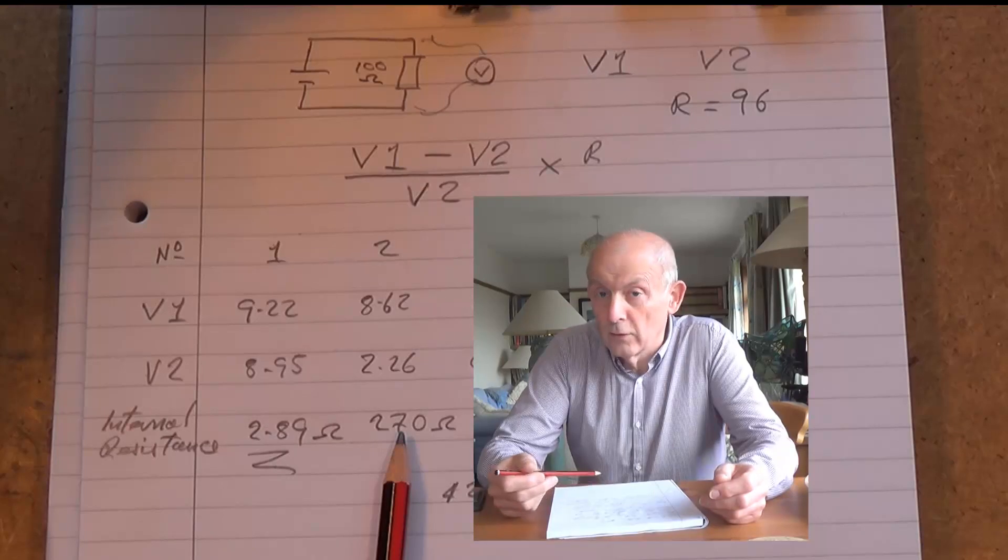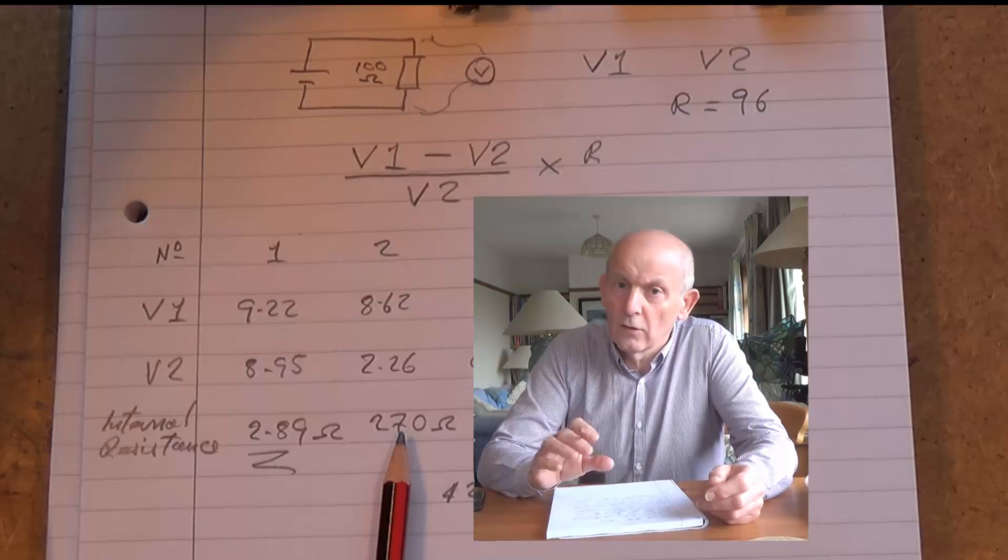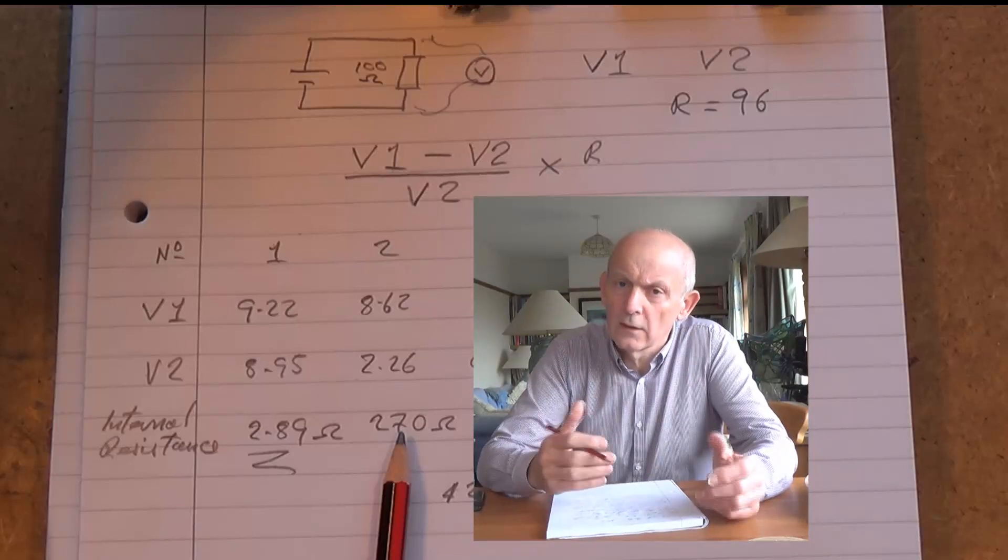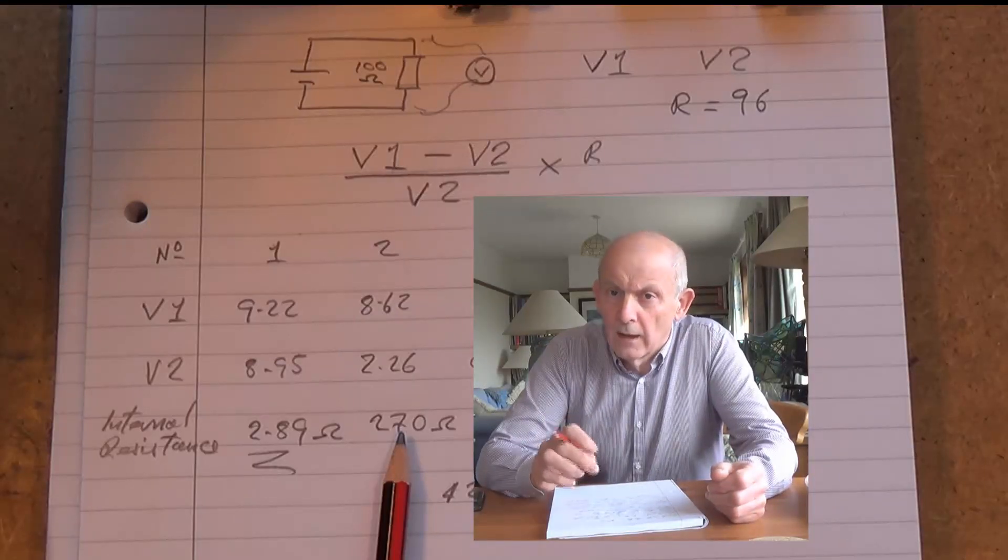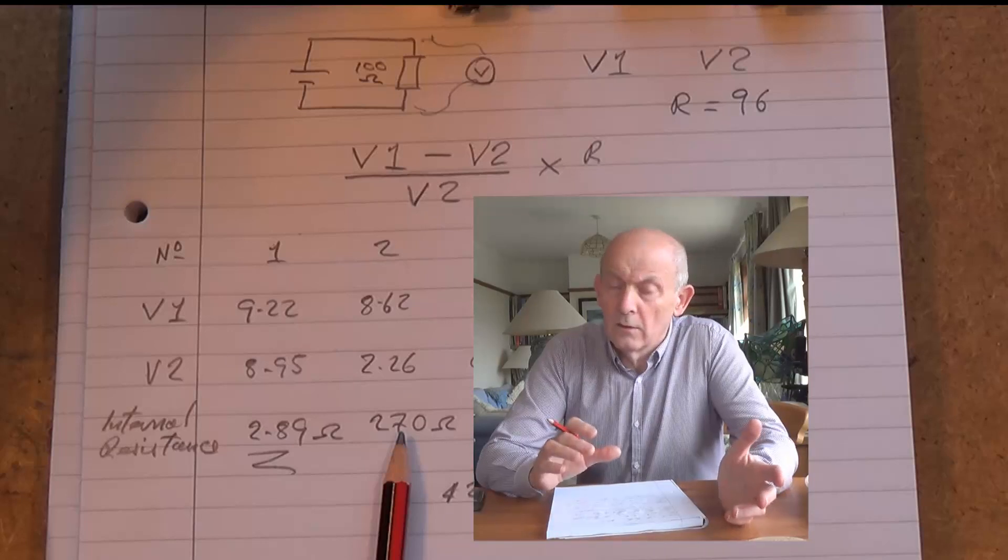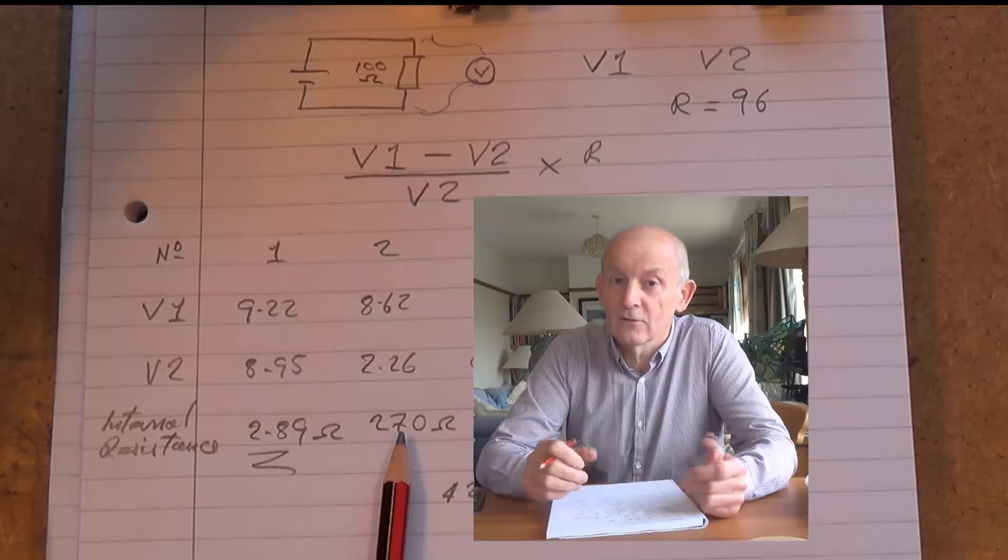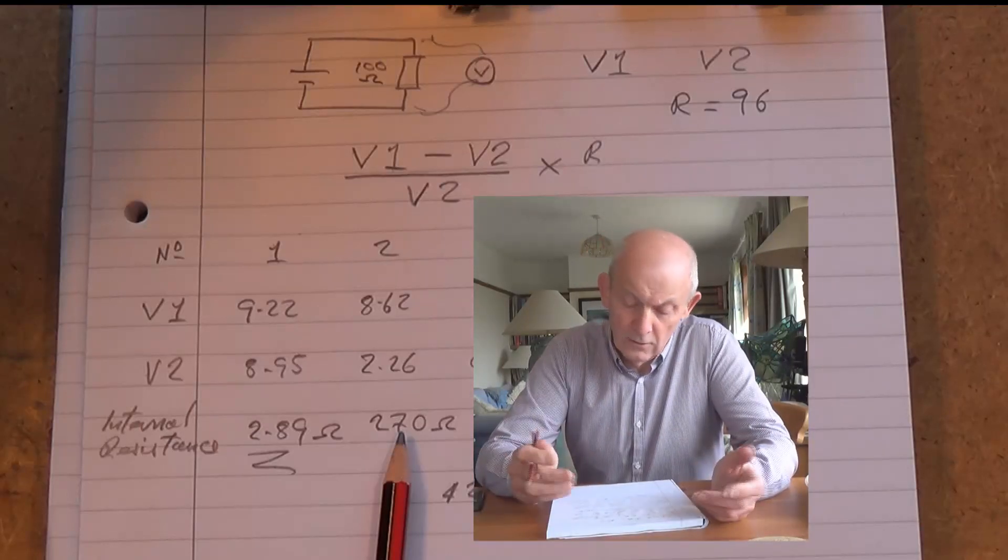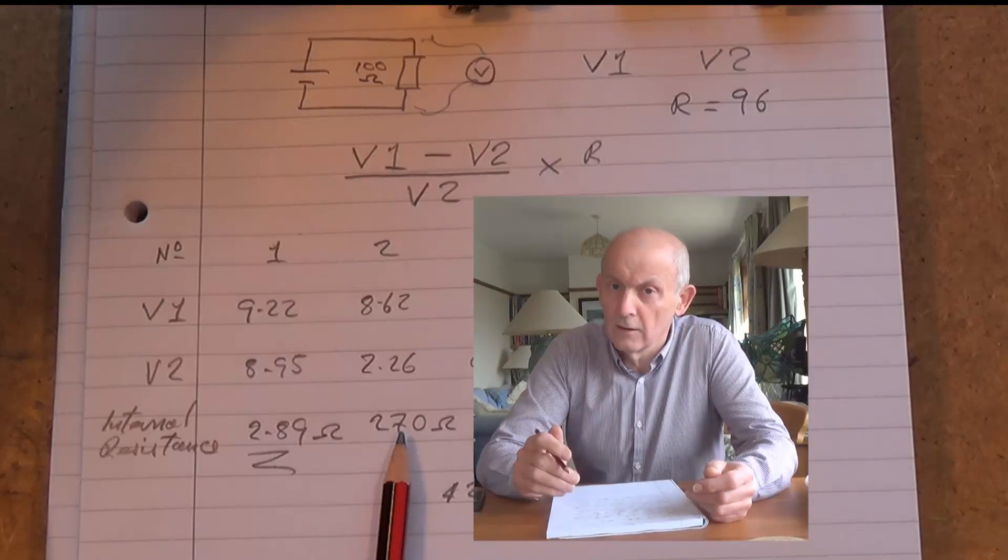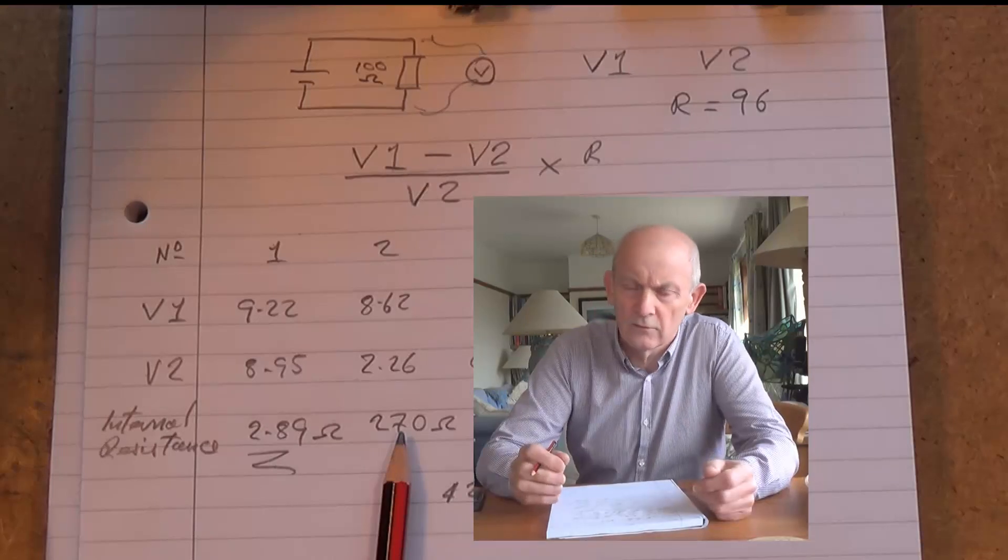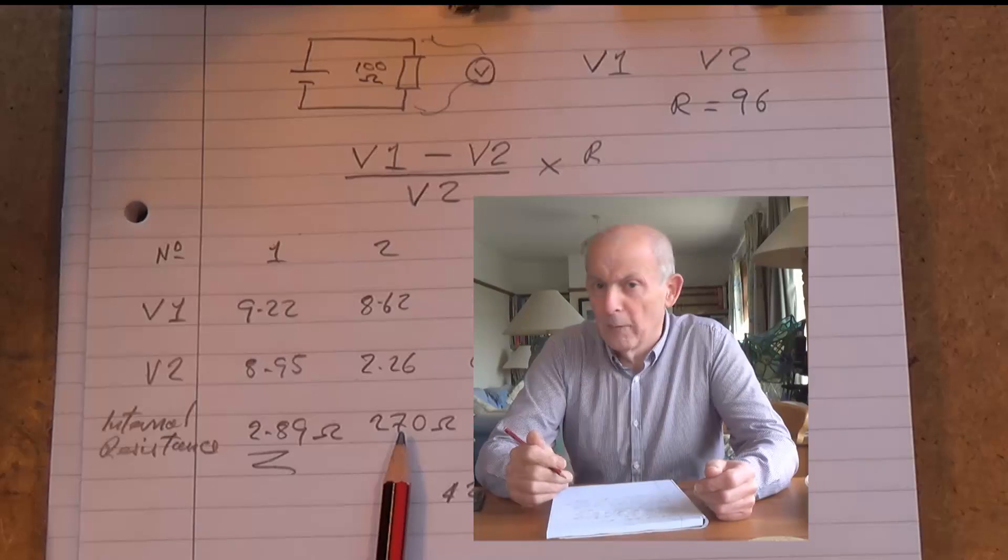So we've lost 6.36 volts somewhere, and that voltage has been dropped across the internal resistance of the battery. So I think that just shows the real significance of the nature of internal resistance. The voltage is still in the battery, but we're losing it across the internal resistance because it's an old battery that's not very good. So you can say the state of charge is reflected in the internal resistance or the internal resistance reflects the state of charge of the battery. But this is clearly a bad battery.